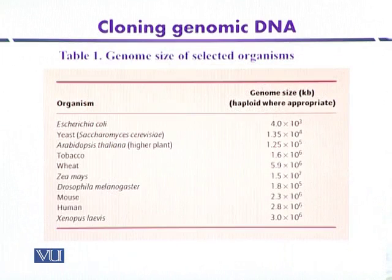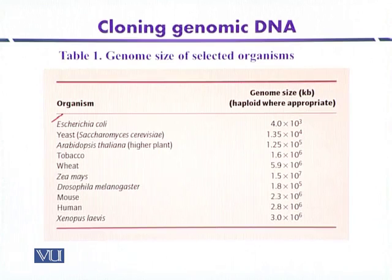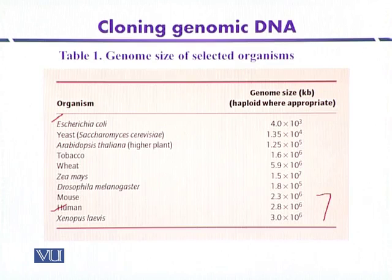We can compare the genomes of different organisms. E. coli has a genome size of 4×10³ kilobase, representing a haploid genome. Yeast is 1.35×10⁴, followed by model organisms Arabidopsis, tobacco, wheat, Zea mays, Drosophila, and mouse. Finally, the human genome is 2.8×10⁶ kilobase, requiring approximately 7×10⁵ DNA fragments to produce a representative human genomic library.